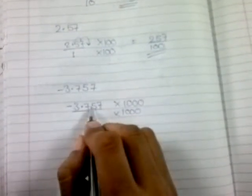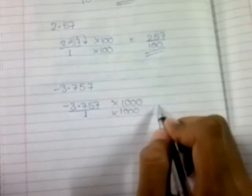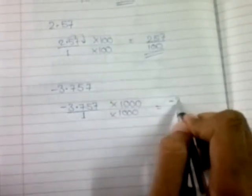In the numerator you have -3.757 times 1000, which gives you -3757. In the denominator you have 1 times 1000, which gives you 1000. Again, these numbers cannot be simplified, so this is your final form. It's a very simple and easy concept: converting terminating decimals to fractions.